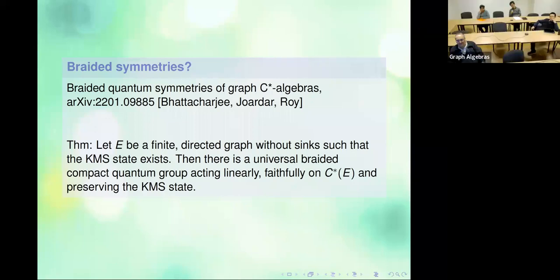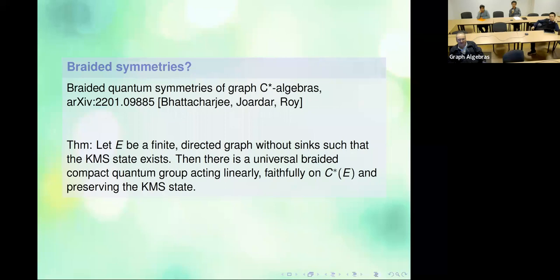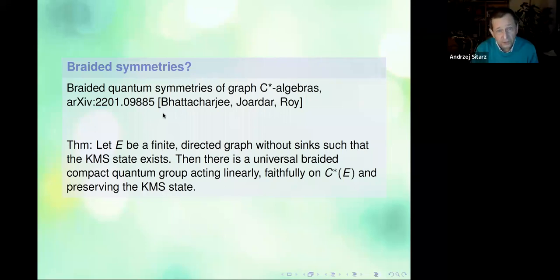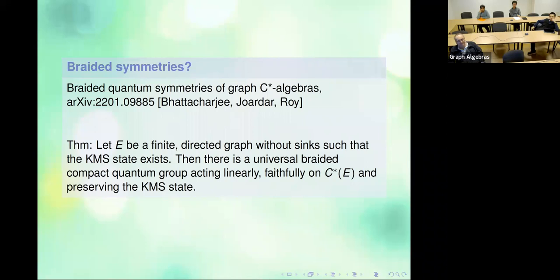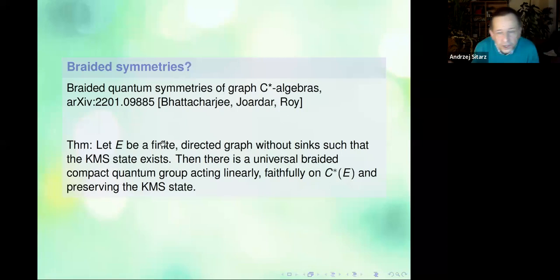The audience asks: would it be right that every compact quantum group is a braided compact quantum group because you can take the trivial braiding? The speaker confirms: of course, yes — every compact quantum group is braided with the trivial braid. There are also fancy examples of braided quantum groups that are symmetries of Podleś spheres, for instance. This is the possibility that symmetries could go beyond compact quantum groups into the braided category.